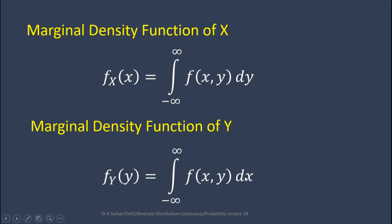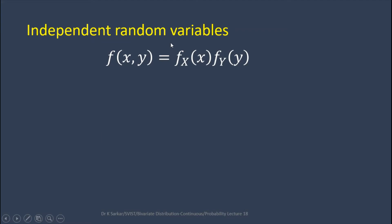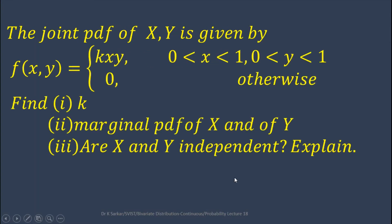Independent random variables: capital X and capital Y are said to be independent random variables if the joint PDF equals the product of the two marginal PDFs — where f is the joint PDF, and the two marginal PDFs are f_X(x) and f_Y(y).